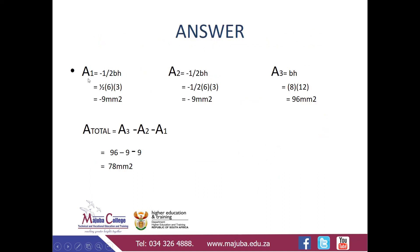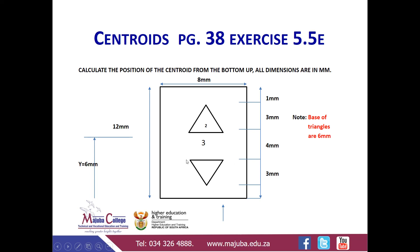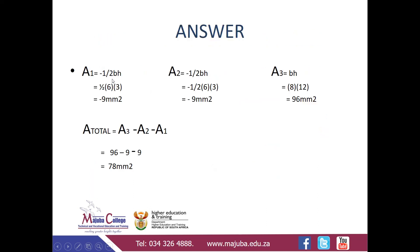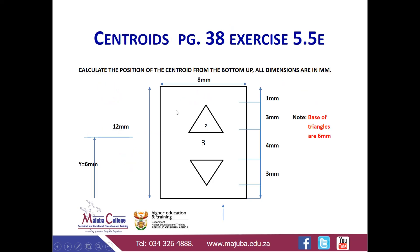For us to be able to calculate the centroid, firstly we need to find the areas of each section. For area number one, it is a triangle facing downwards, so the formula to calculate the area of a triangle is half base times height. So it's half of 6, which is the base.